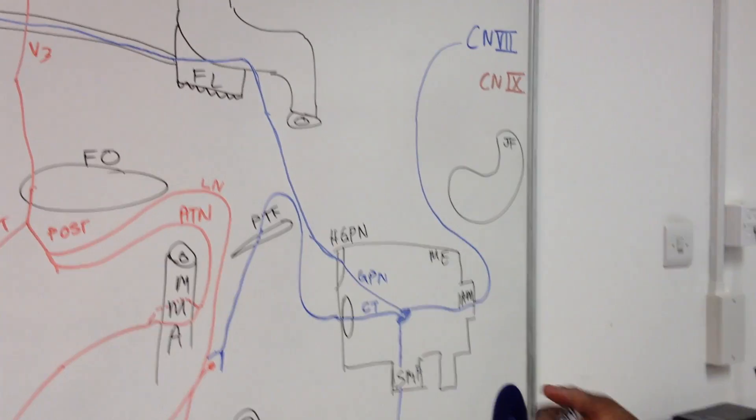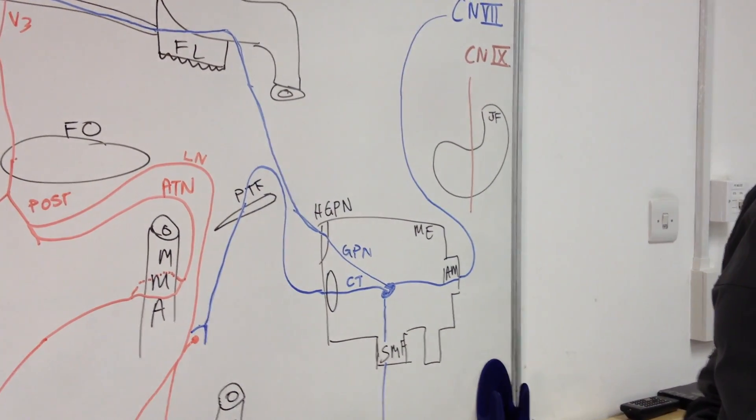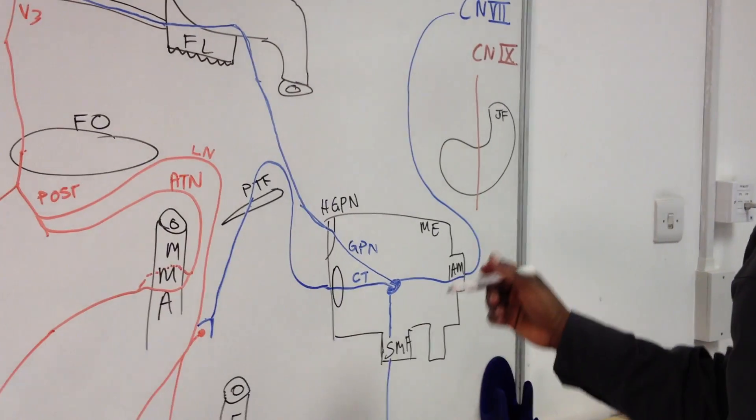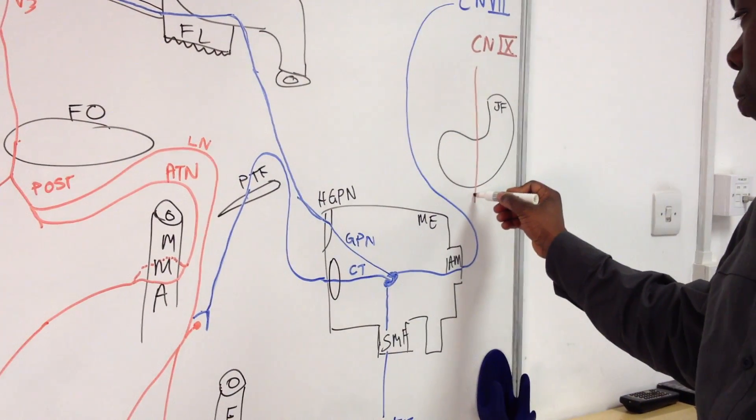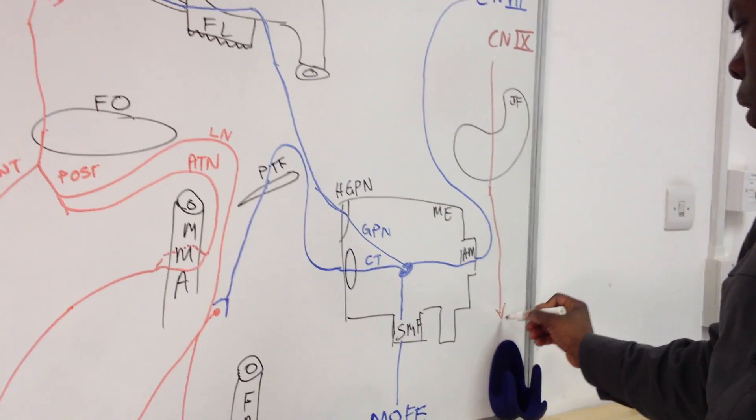The glossopharyngeal nerve comes down through the jugular foramen. As it leaves the skull, along with the vagus and accessory nerves, it sends some branches which are going to go down towards the pharynx.